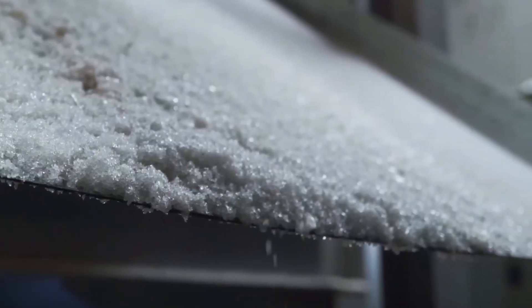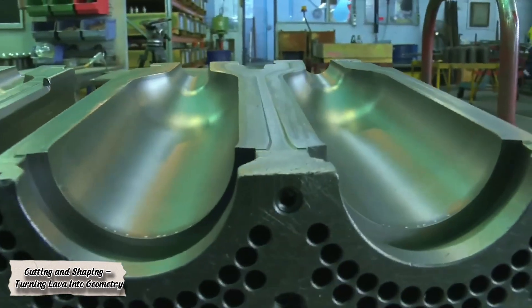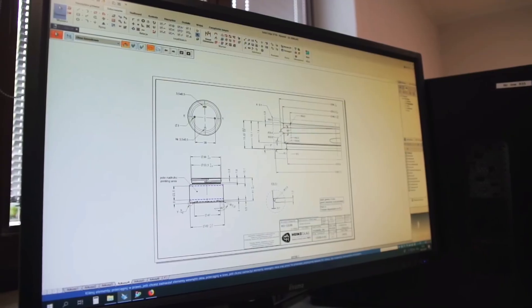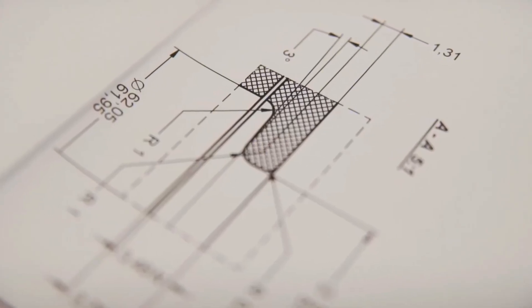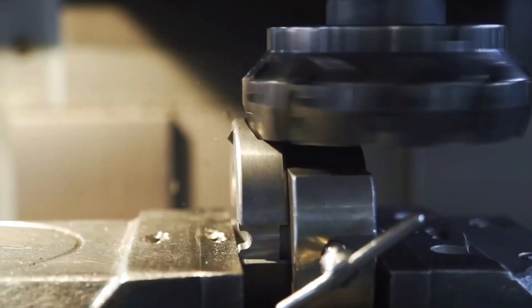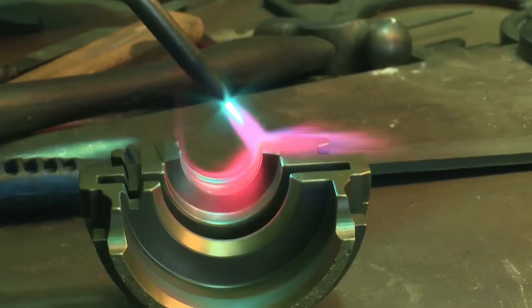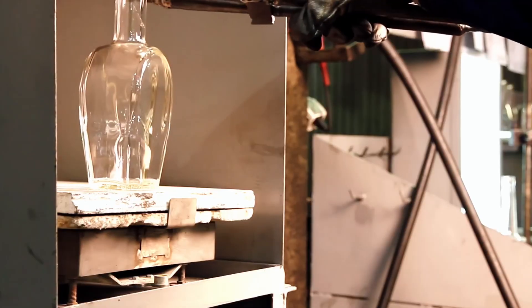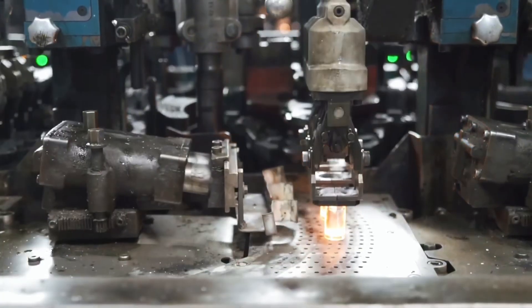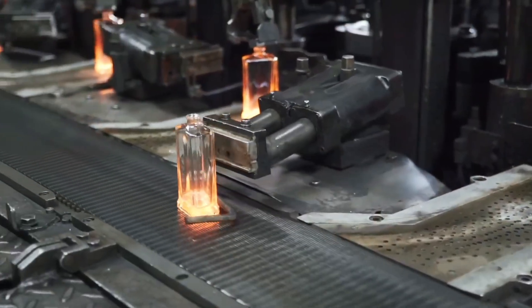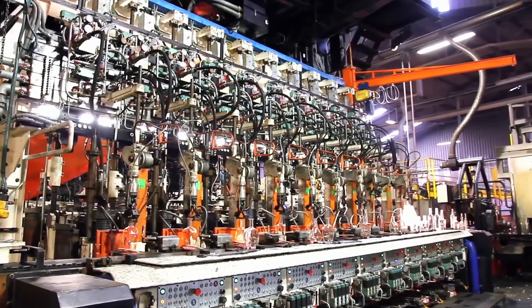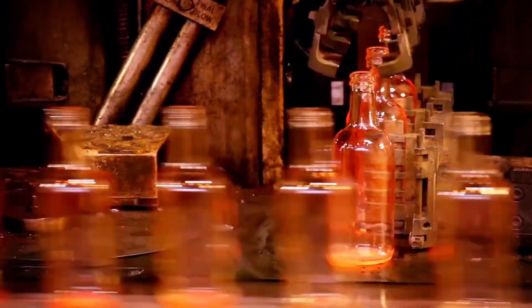When the massive solidified blocks of foam glass leave the furnace, they must be transformed into usable building materials. Automated saws equipped with diamond blades cut the blocks into panels, boards, and cubes of various sizes. The cutting process happens at high speed—several dozen meters per minute. Laser sensors monitor accuracy down to the millimeter, since even the slightest deviation can affect the thermal properties of the final product. Some blocks remain in their original form for large-scale infrastructure projects.